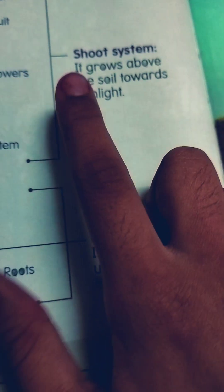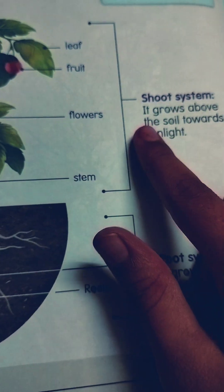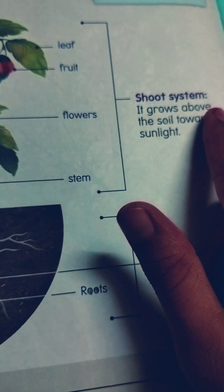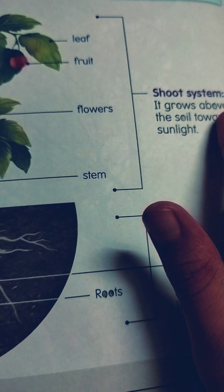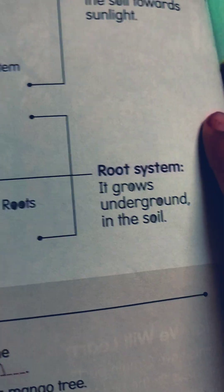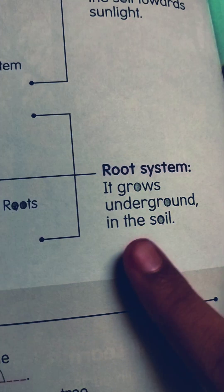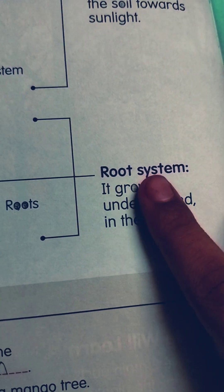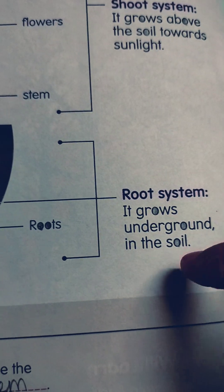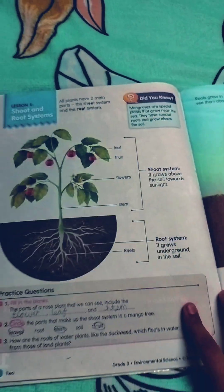Okay, let us read. Shoot system: it grows above the soil towards sunlight. Root system: it grows underground in the soil. Understand?